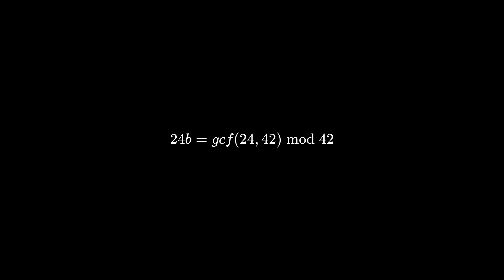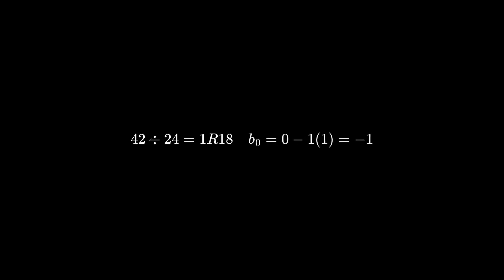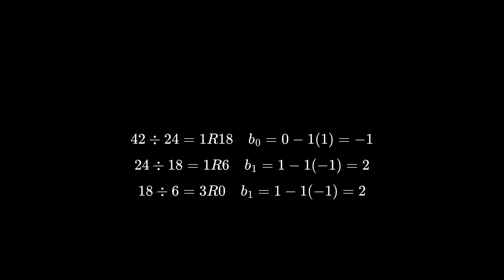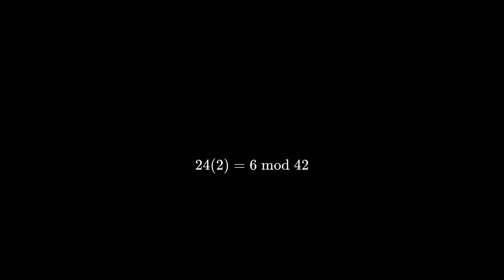You may know about Euclid's algorithm for finding the greatest common factor between two numbers. Well, it turns out you can extend this algorithm to give us a value for b. Here's how it works: begin by dividing the large number by the smaller one. We get a quotient q and a remainder r, and we'll keep track of a variable b — for now it's set to 0 minus 1 times our quotient, so it's just negative 1. Next we'll do the same thing again, dividing the previous divisor by the previous remainder. For the next b value, we do 1 minus the quotient times the previous b value, which ends up being 2. Keep doing this process until there's a remainder of 0. The greatest common factor will be the remainder of the second-last iteration, and the value for b will be the second-last b value. So we find that 24 times 2 mod 42 equals 6.